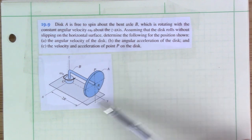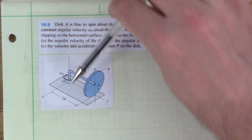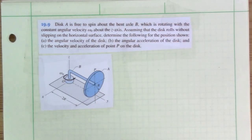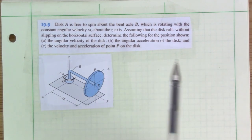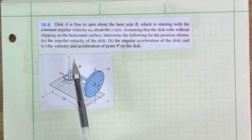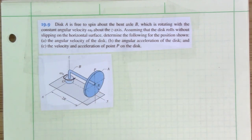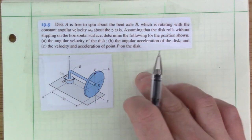The first example has a rotating wheel rolling on the ground, rotating because a shaft rotates about an axis. There are no numbers, so we'll get expressions for: the angular velocity of the disk (omega_a), the angular acceleration of the disk (alpha_a), and the velocity and acceleration of the point at the top.